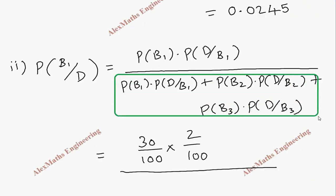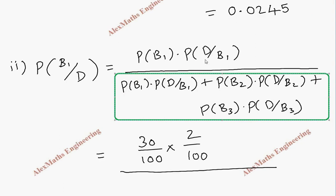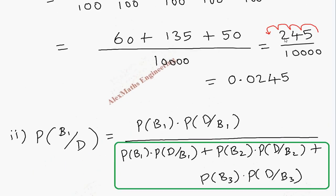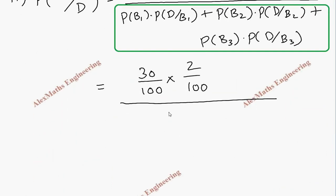So we can directly take the value from that and that value is 245 by 10,000. So we will write 245 divided by 10,000. And we can cancel the common denominator, this 10,000 and this 10,000. And finally, this is 60 divided by 245.